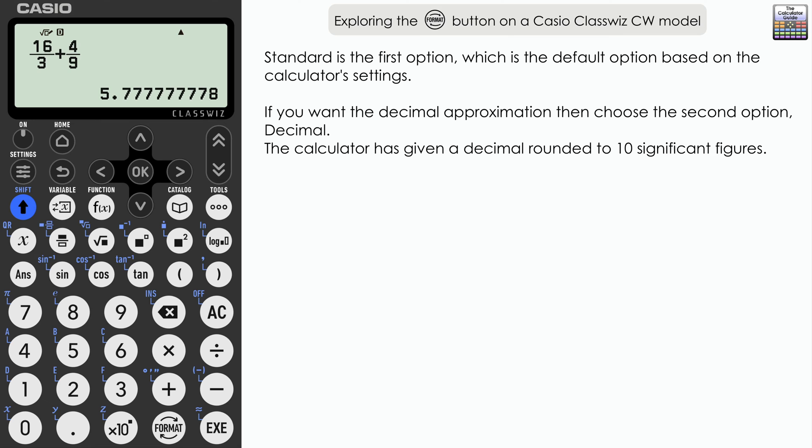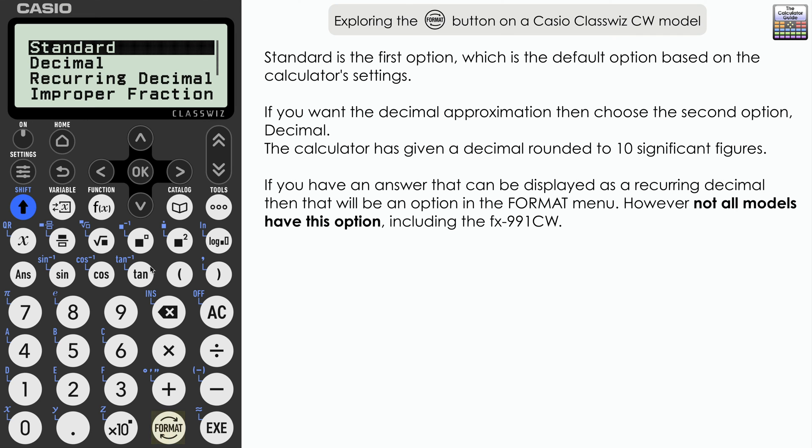Now if we have a recurring decimal, which we do in this case, then the recurring decimal will appear as an option in the format menu. This isn't true for all models of CW. In fact, I couldn't find this on the fx-991 CW model. It doesn't appear to be an option. So you will just have to check with your model of CW ClassWiz if you've got recurring decimal as an option. It is here on the 85GTCW model, but only if your answer can be displayed as a recurring decimal and this one can.